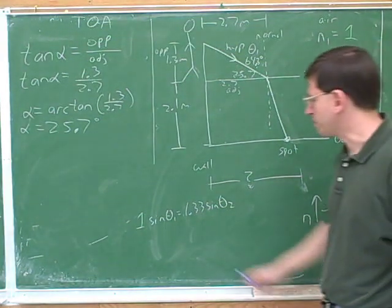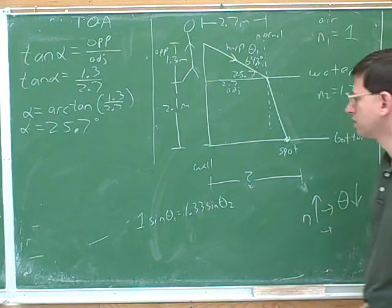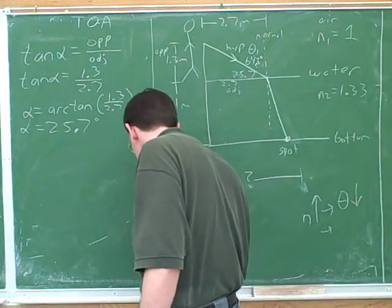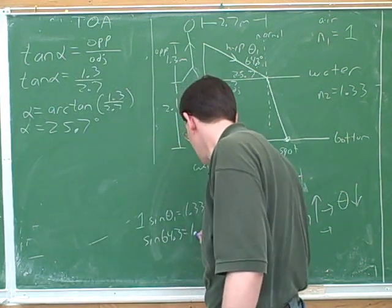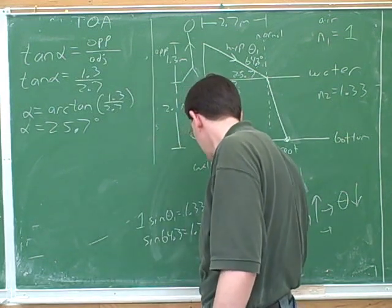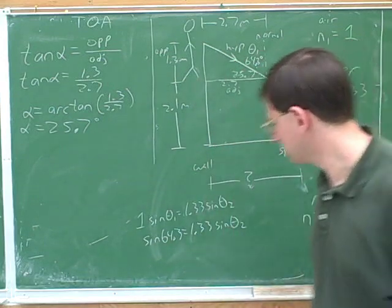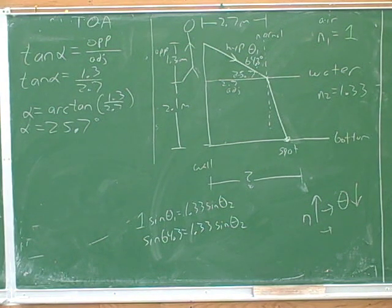So we can plug in theta one equals 64.3 degrees into Snell's law and solve for theta two.